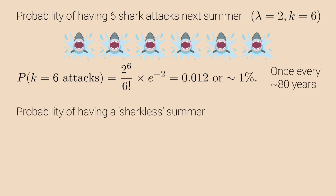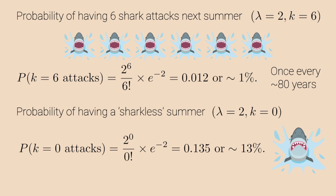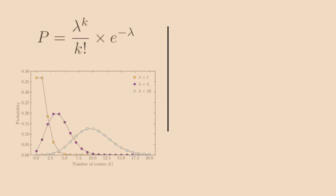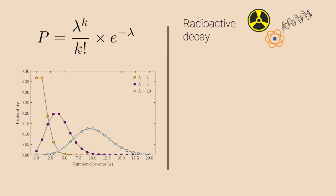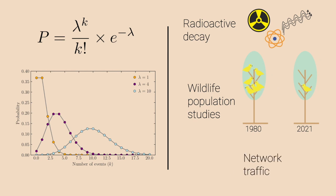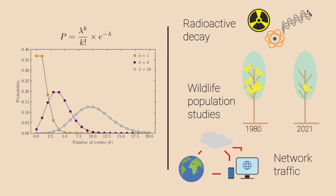Similarly, the probability of having a summer without any shark attacks can also be obtained by simply putting lambda equal to 2 and k equal to 0 which gives us a probability of 13%. Hence we expect a sharkless summer every 7 or 8 years. Poisson distribution is used to model radioactive decay, ecological studies of wildlife population, and traffic flow on the internet, etc.